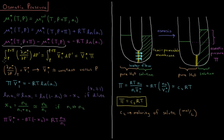To find this difference in chemical potential, we look at the integral from P to P plus π of the partial derivative of the chemical potential of pure water with respect to pressure, integrated over pressure. The partial derivative of chemical potential with respect to pressure equals the partial molar volume of the solvent. So this equals the integral from atmospheric pressure to P plus π of the partial molar volume of the pure solvent, integrated over pressure.